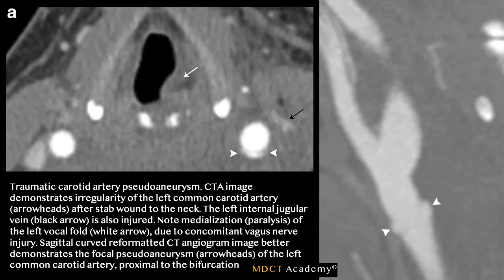Image A demonstrates a traumatic carotid artery pseudo-aneurysm. This shows irregularity of the left common carotid artery, indicated by two white arrowheads, after a stab wound to the neck. The left internal jugular vein, shown by the thin black arrow, was also injured. Note the paralysis of the left vocal cord, shown by the white arrow, due to vagus nerve injury. On the sagittal curved reconstruction, you can see the pseudo-aneurysm inferiorly with two white arrowheads — a bulge coming out without involving the entire vessel.